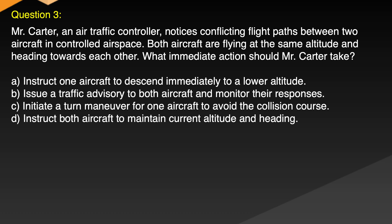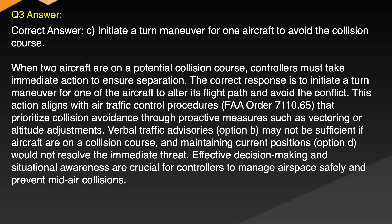Question 3. Mr. Carter, an air traffic controller, notices conflicting flight paths between two aircraft in controlled airspace. Both aircraft are flying at the same altitude and heading towards each other. What immediate action should Mr. Carter take? A. Instruct one aircraft to descend immediately to a lower altitude. B. Issue a traffic advisory to both aircraft to monitor their responses. C. Initiate a turn maneuver for one aircraft to avoid collision course. D. Instruct both aircraft to maintain current altitude and heading. Correct answer: C. Initiate a turn maneuver for one aircraft to avoid the collision course.